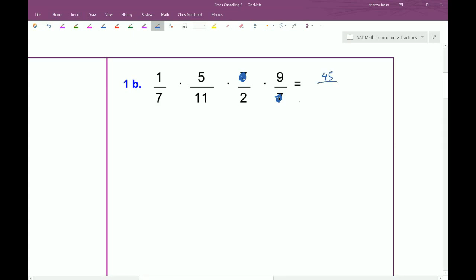So anyway, you just would multiply everything up. 45 here, and then 77 times 2. So what is that? 154.